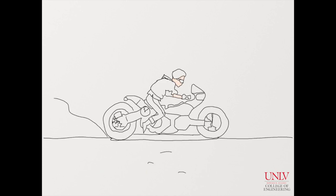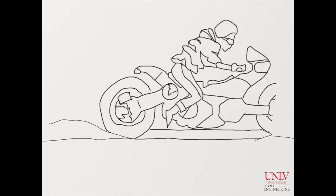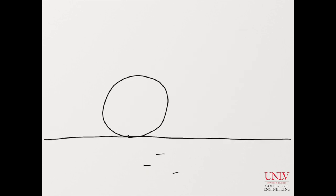Cycloid can be found from any wheels. It is a curve one point draws when the wheel is moving.